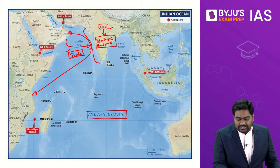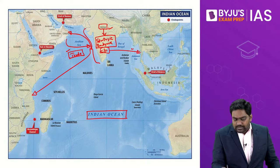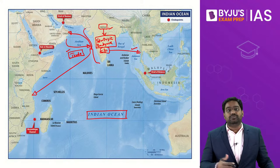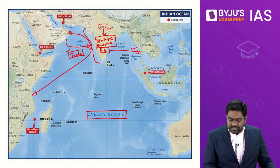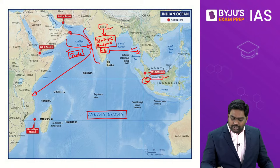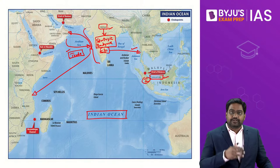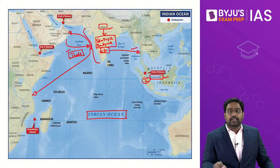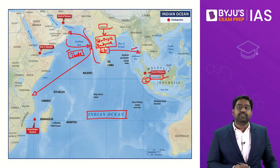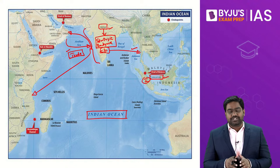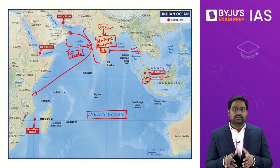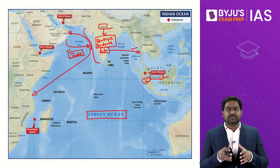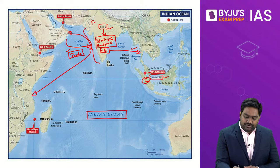The Cholas and Pallavas also had active influence across today's Southeast Asia, particularly towards Indonesia and Singapore. They had trading as well as political and strategic relationships in the Southeast Asian region. So since many centuries, India has been the center and the fulcrum of the Indian Ocean region.